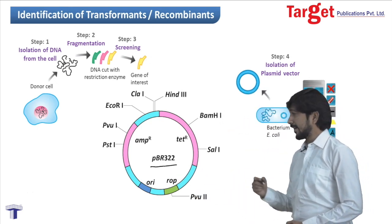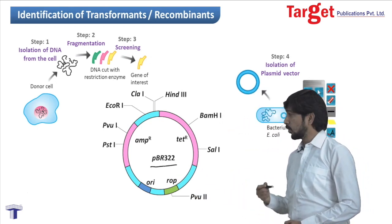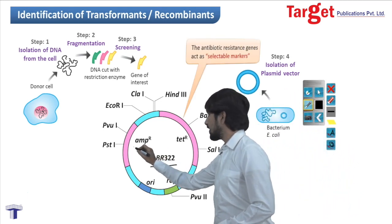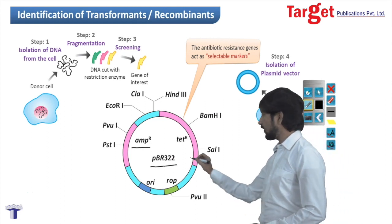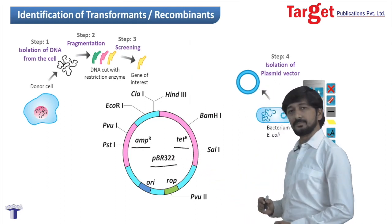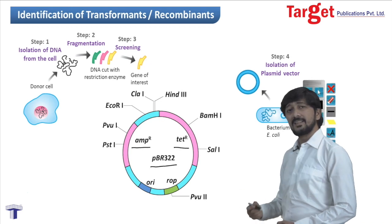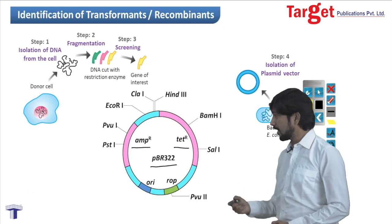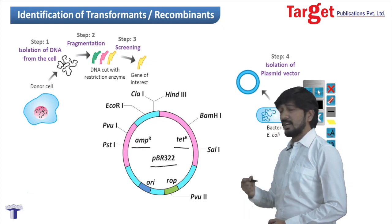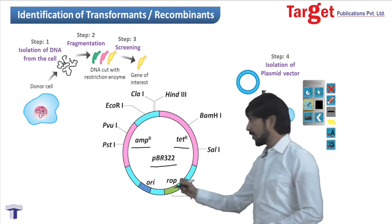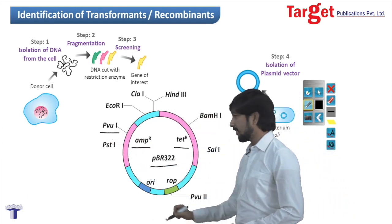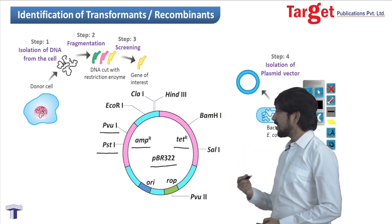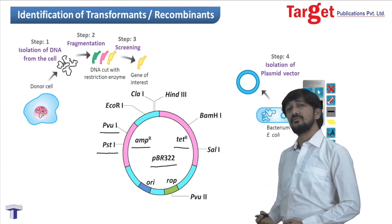If we look at the plasmid pBR322, we can see that there are two antibiotic resistance genes. The first one is the ampicillin resistance gene and the second one is the tetracycline resistance gene. Within these antibiotic resistance genes there are various restriction sites. For example, the ampicillin resistance gene contains restriction sites for PVU1 and PST1, whereas the tetracycline resistance gene contains restriction sites for BamH1 and SAL1.